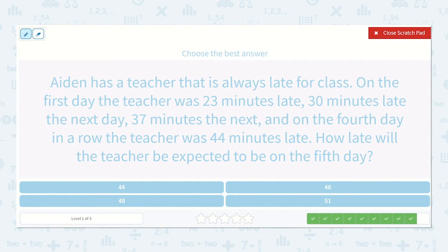Aiden has a teacher that is always late for class. On the first day, the teacher was 23 minutes late. 30 minutes late the next day, and 37 minutes the next. And on the fourth day, in a row, the teacher was 44 minutes late. How late will the teacher be expected to be on the fifth day? So we have 23, 30, 37, 44, and then our missing number.